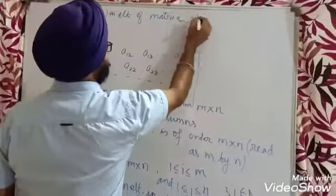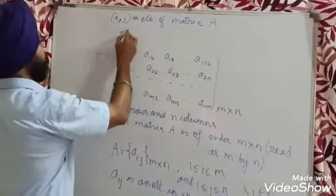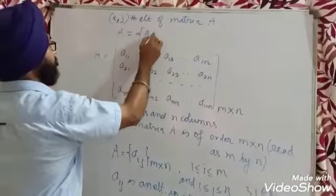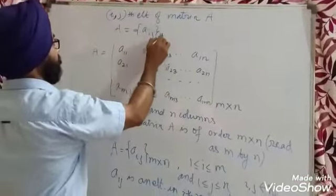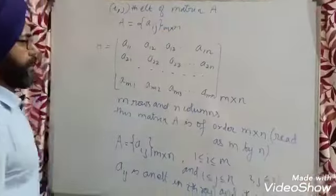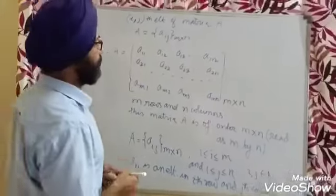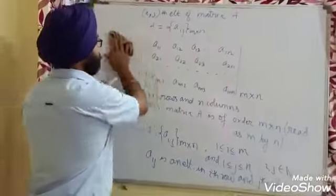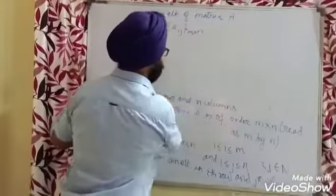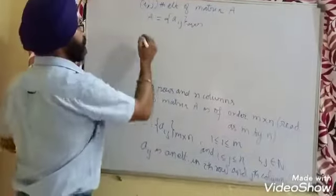AIJ is also known as the IJ-th element of matrix A. So A can be written symbolically as AIJ of order M by N — it is an M by N matrix with order M by N. Let us take some examples to make this more clear.